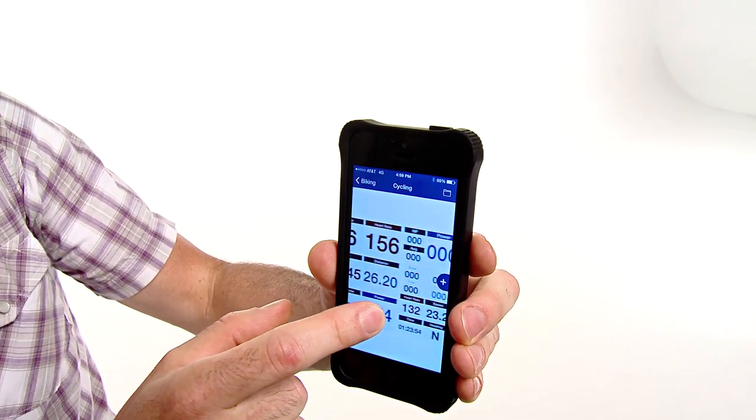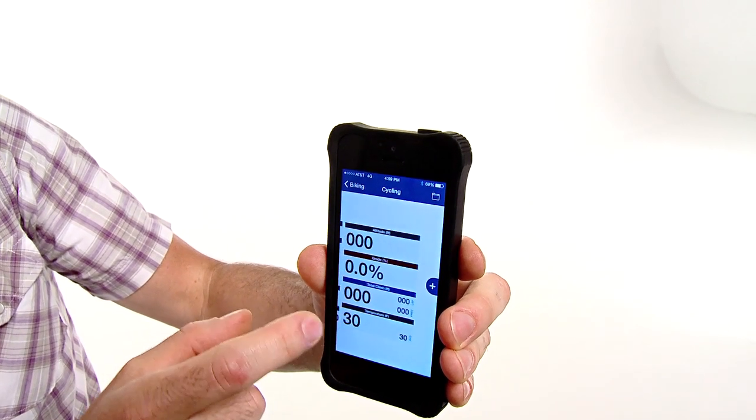My favorite part about the Wahoo Reflect Plus bicycle computer is the level of innovation. It's Bluetooth enabled, and it's ANT+ enabled, and nowhere else can you get the level of screen customization that you can get on this unit.